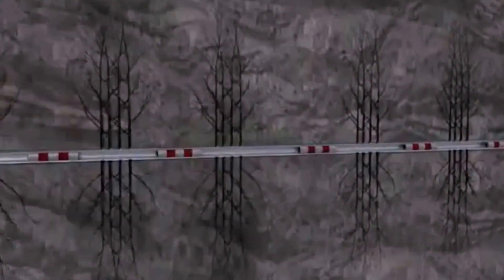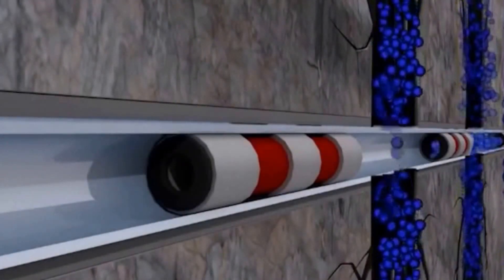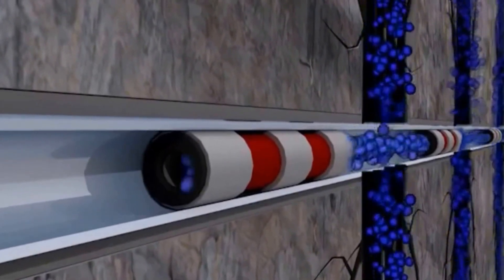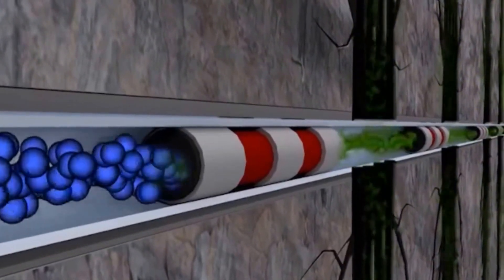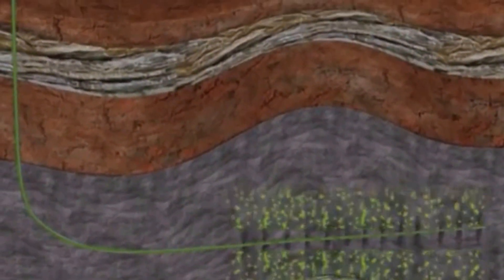Once the stimulation is complete, the isolation plugs are drilled out, and production begins. Initially water, and then natural gas or oil, flows into the horizontal casing and up the wellbore.